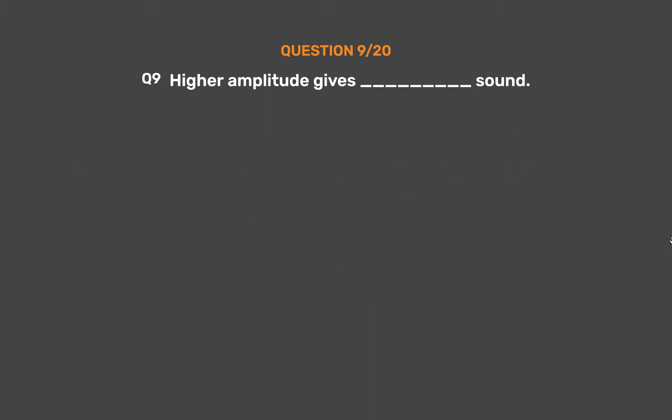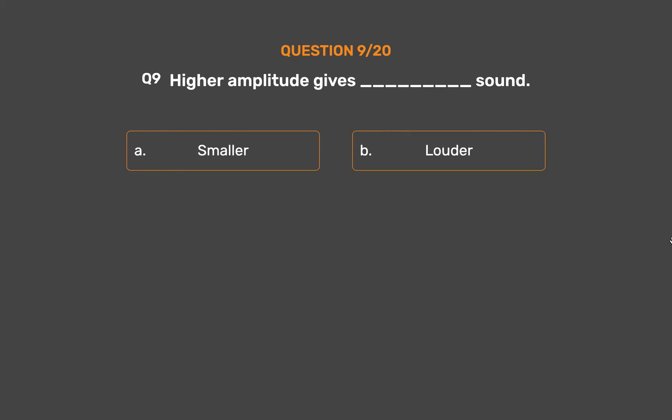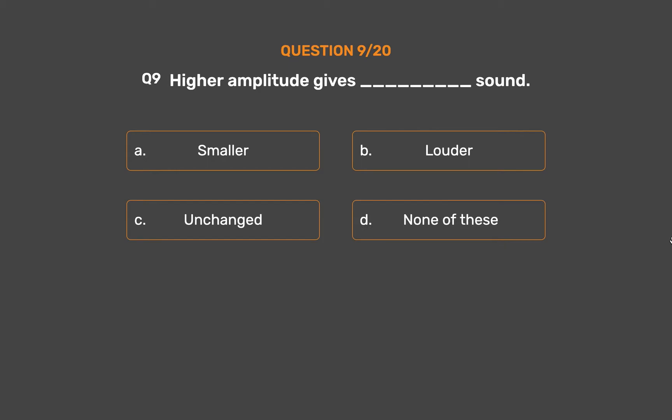Question number 9. Higher amplitude gives underscore sound. Option A, Smaller; Option B, Louder; Option C, Unchanged; Option D, None of these.